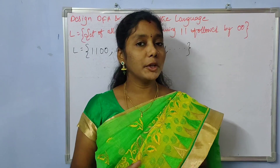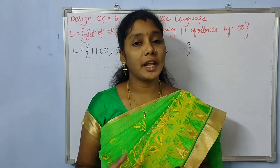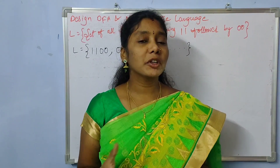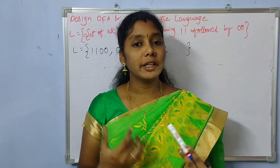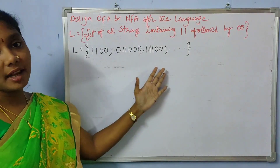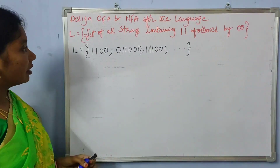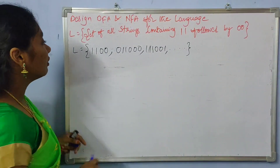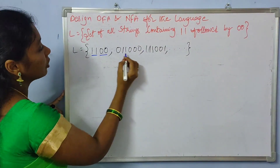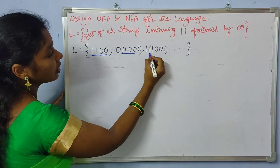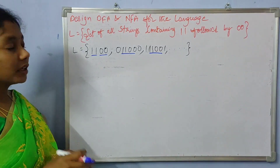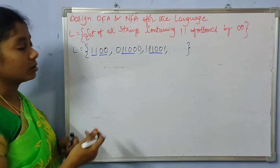Hi all, welcome back. In this video I am going to construct a DFA and NFA for the same kind of problem — the language consisting of strings in which double one is followed by double zero. So wherever you get double one in the string, it should be immediately followed by double zero. For this we need to construct both the DFA and NFA.